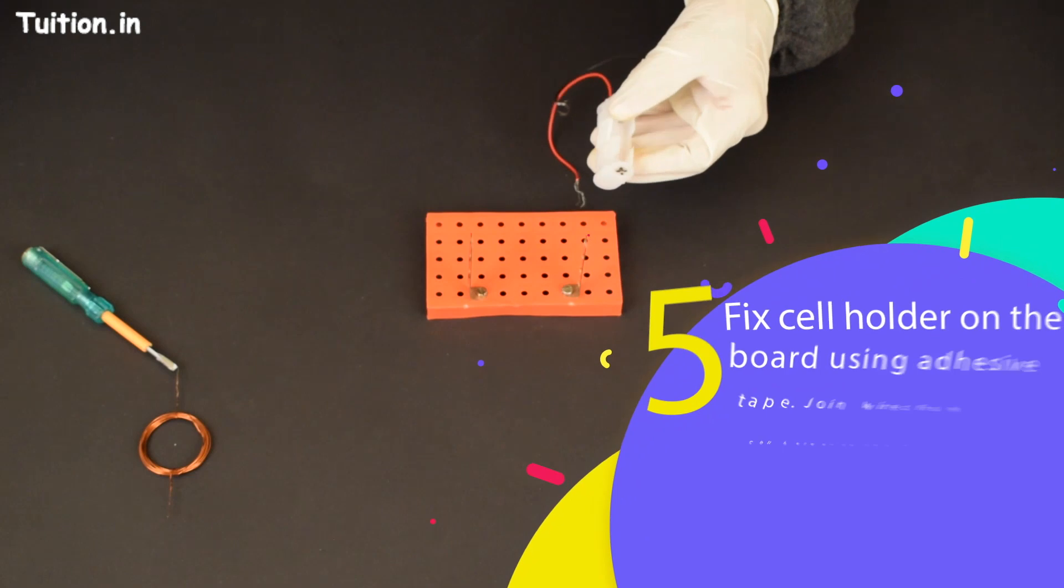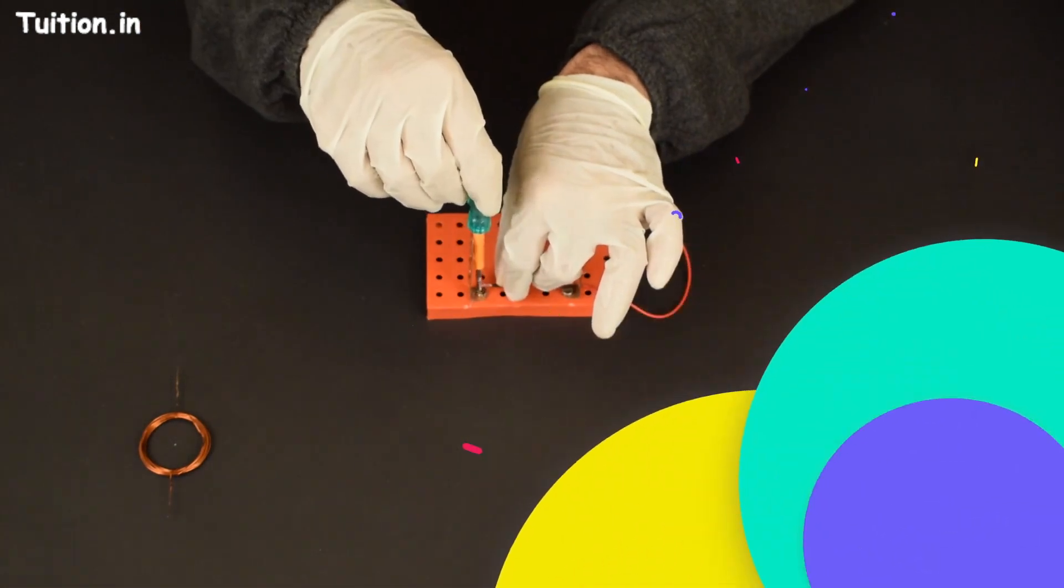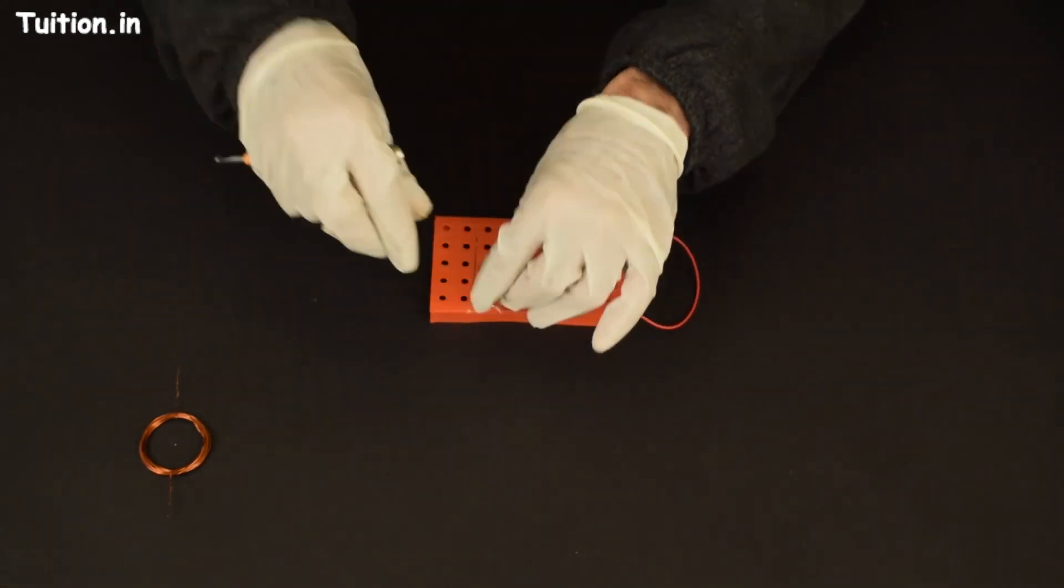Fix cell holder on the board using adhesive tape. Join wires from cell holder to the bolts at the base of the copper brackets.